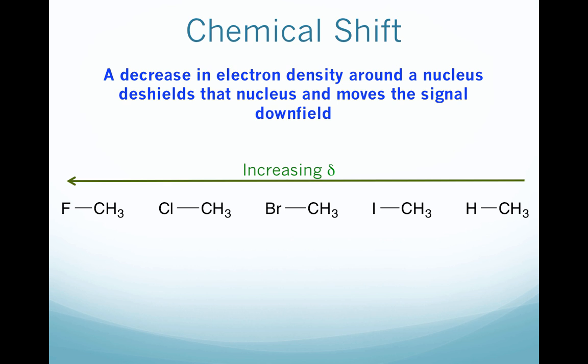The first thing we're going to see is that any decrease in electron density around the nucleus is going to deshield that nucleus and move it further downfield. So always keep in mind: deshield means downfield, which means a higher chemical shift.